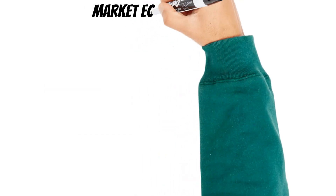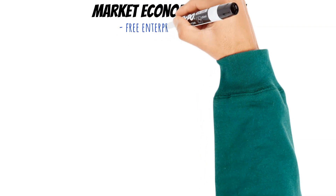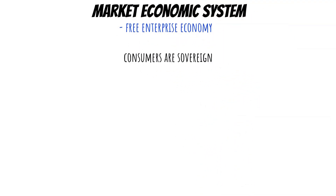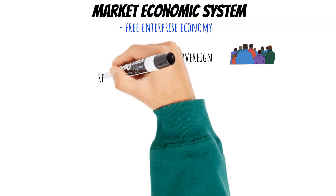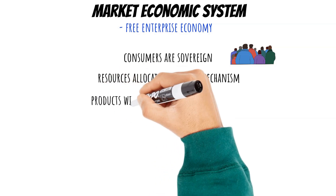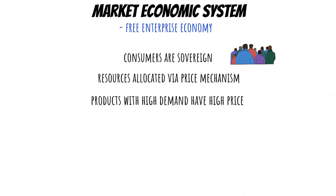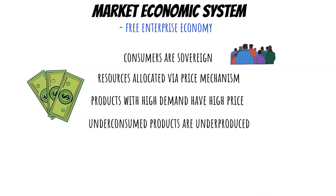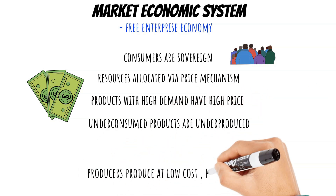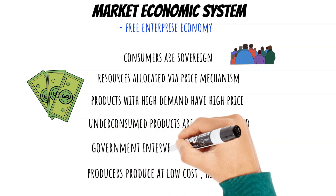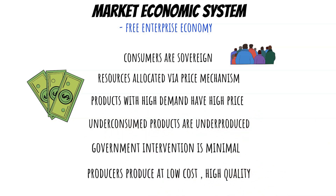Market economy, also called free enterprise economy, is an economic system wherein consumers decide what is produced — that is by price mechanism. Products that have high demand are sold at a higher price, and products with low demand are underproduced and have a lower price. Some distinctive features include: government intervention is minimal, capital and land are privately owned, and because resources are allocated by price mechanism, producers seek to produce at low cost and high quality.